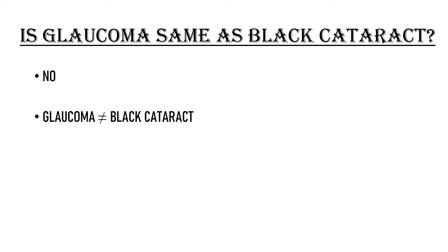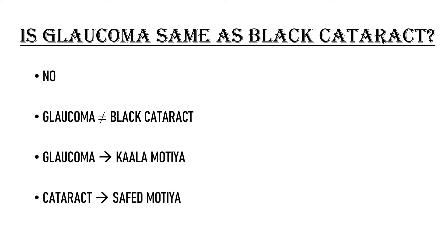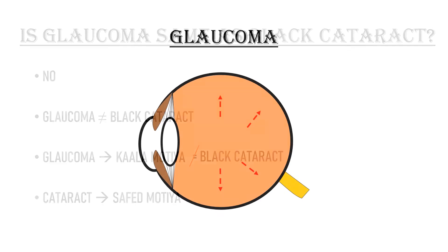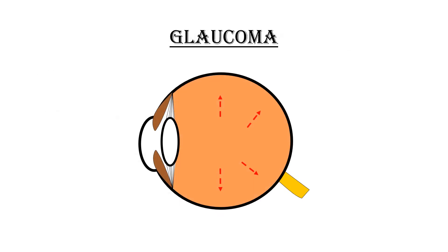Is glaucoma the same as black cataract? No, this is a very common misconception. Glaucoma is called kalamutia and cataract is called safemutia, and people translate kalamutia to 'black cataract' — but this is wrong. Glaucoma and cataract are two entirely different eye conditions with vastly different treatments. Loosely speaking, glaucoma is when pressure inside your eye increases and damages the nerve of your eye — it has nothing to do with lens opacification. I personally discourage using the term kalamutia for glaucoma and recommend reserving the word mutia for cataracts only.